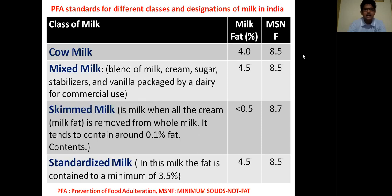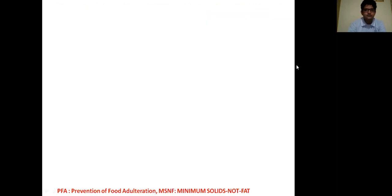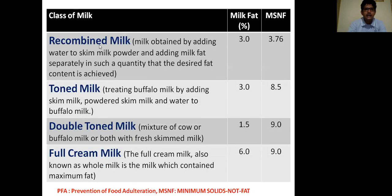The next class of milk is standardized milk. In this milk, the fat is contained to a minimum of 3.5%. The milk fat content of standardized milk is 4.5% and the MSNF percentage is 8.5%.